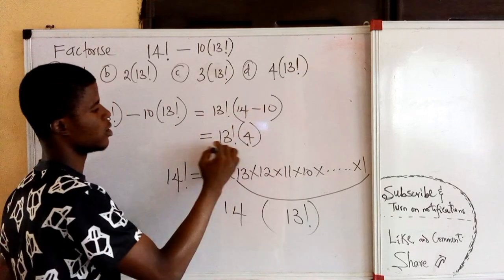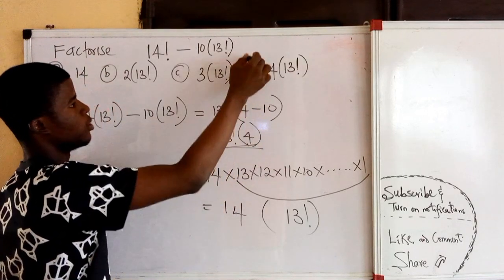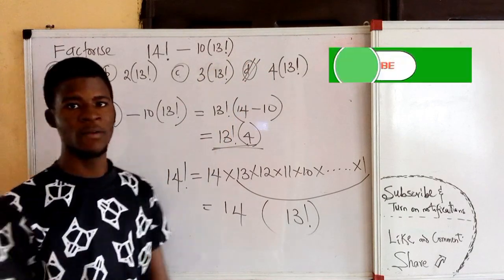14 minus 10 is what? 4. So this gives us option D as the answer to this question.